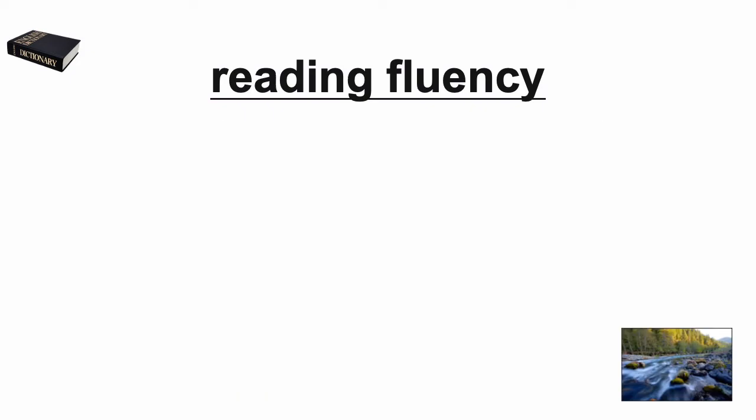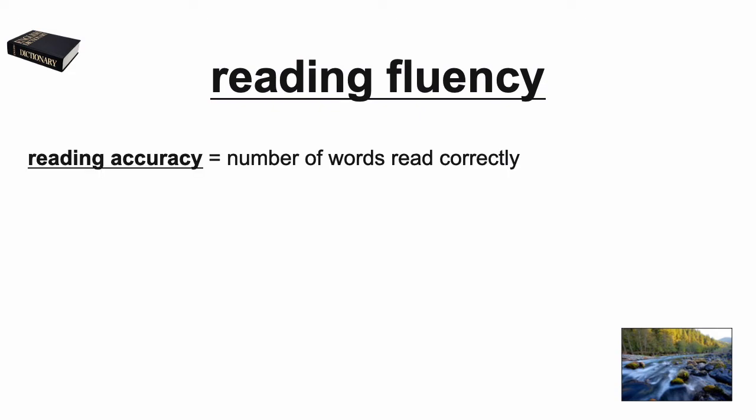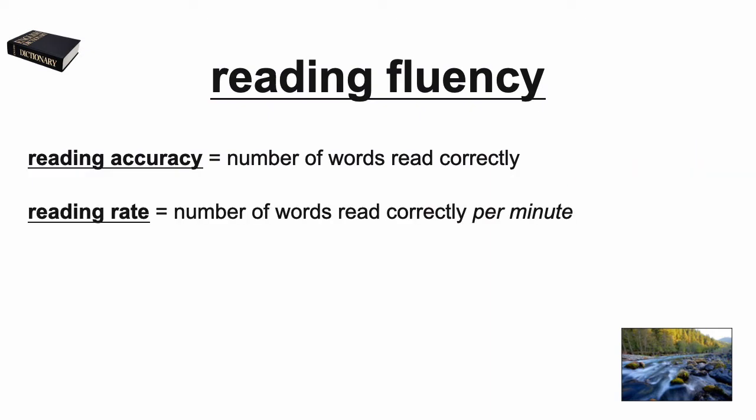Reading accuracy is the number of words read correctly. Being able to read a text accurately depends on both decoding ability and vocabulary knowledge. Students may have to slow down when reading orally to decode along the way, but they could still be reading with a high degree of accuracy. However, for those students, accuracy comes at the expense of reading at an appropriate conversational rate. Reading rate is the number of words read correctly per minute. Assessing students' words read correctly per minute, or WCPM, is a very common way of measuring and monitoring reading progress.